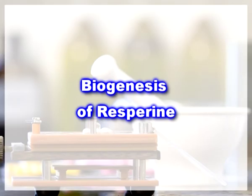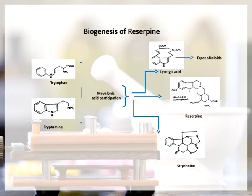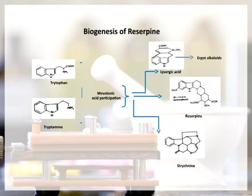Biogenesis of reserpine: Tryptophan and its decarboxylation product tryptamine give rise to the large class of indole alkaloids. These species usually contain two nitrogen atoms — one the indole nitrogen, and the second generally two carbons removed from the beta position of the indole ring. The more complex indole alkaloids contain a non-tryptophan-derived portion supplied by mevalonic acid, which then forms lysergic acid, reserpine and strychnine. Lysergic acid converts into ergot alkaloids.